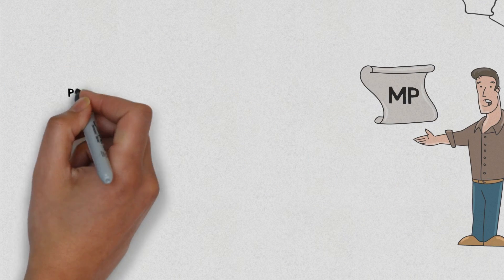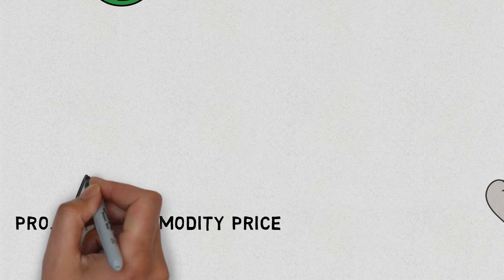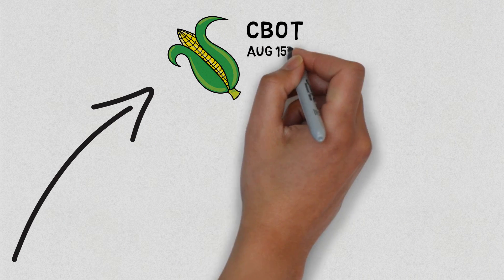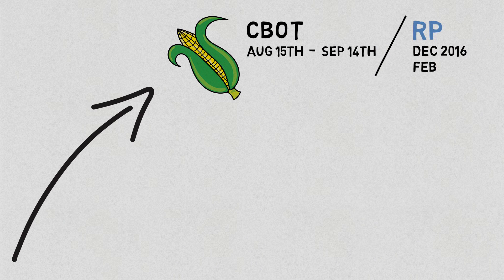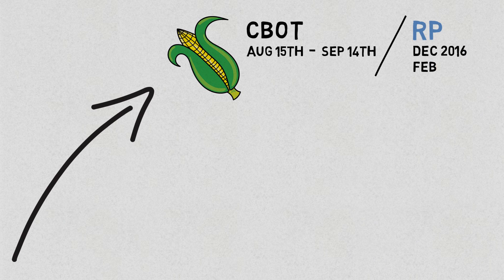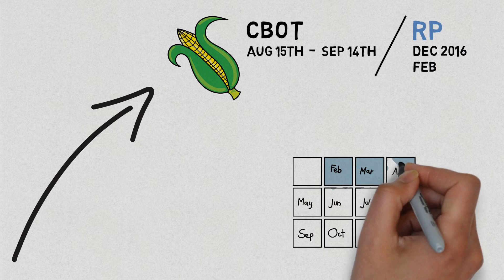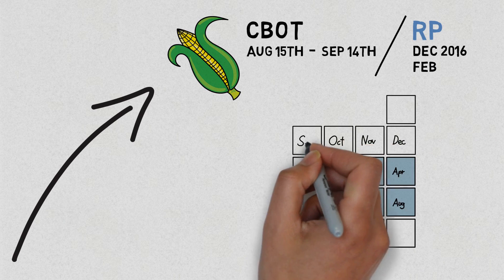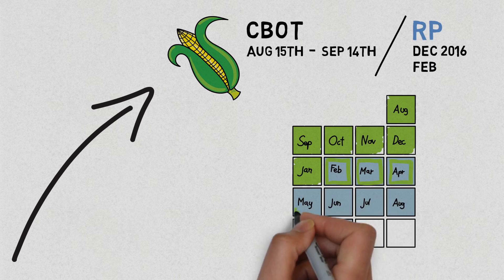Your combination of yield and price loss will need to exceed $118.28 for this RP policy to pay out. Now let's compare this to Margin Protection. Margin Protection starts with the projected commodity price. For corn, this is the Chicago Board of Trade December 2016 contract average daily close from August 15th to September 14th — opposed to RP, which uses the Chicago Board of Trade December 2016 contract average daily close for the month of February. Margin Protection sets the spring price 5.5 months before RP does, extending coverage from August of the previous year until October of the current year — an additional 5.5 months of coverage.